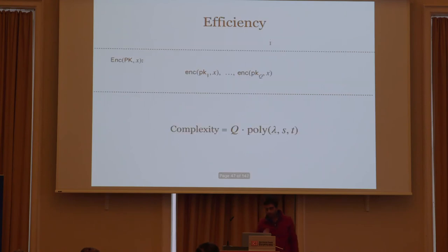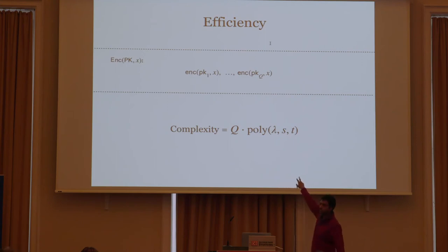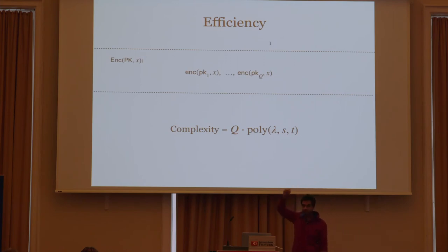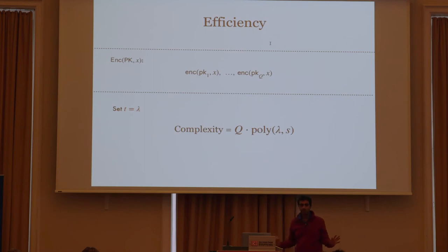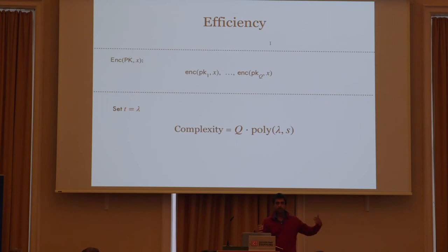Why does this satisfy linear encryption complexity? I'm repeating Q times, so the complexity is Q times poly(lambda, S), where S is the size of circuit C and T is the query bound for the inner scheme. I set T to be the security parameter, so the complexity becomes Q times polynomial in lambda and S — taking an FE scheme with large encryption complexity, setting the bound to be small, to get an FE scheme with linear complexity and a large query bound.